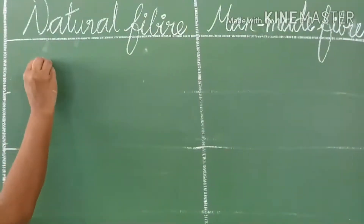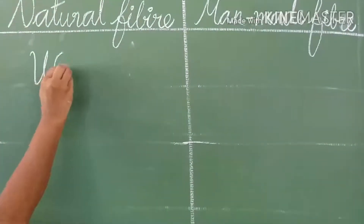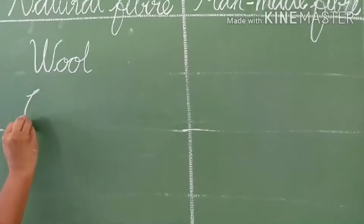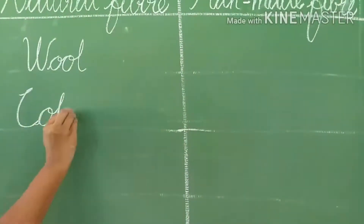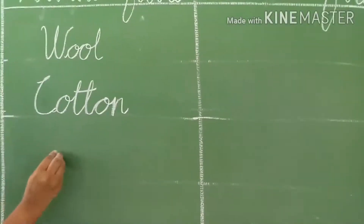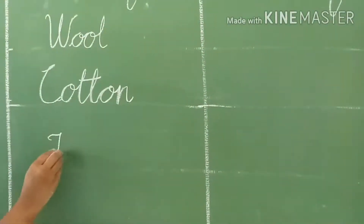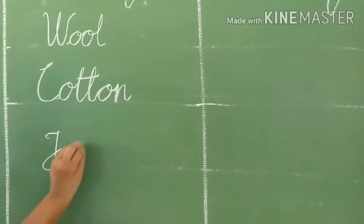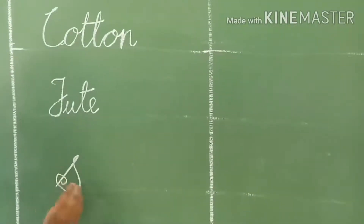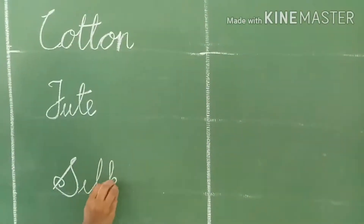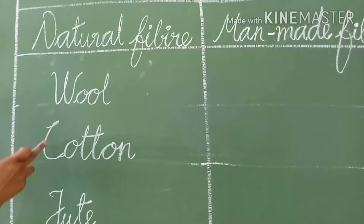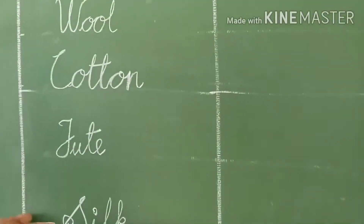Now write in the Natural Fiber column: Wool, Cotton, Jute, and Silk. So the natural fibers are Cotton, Jute, and Silk.